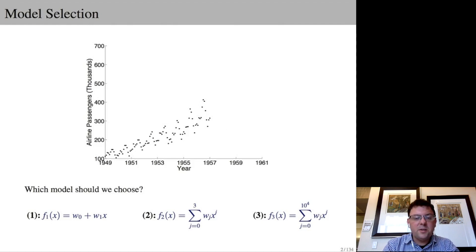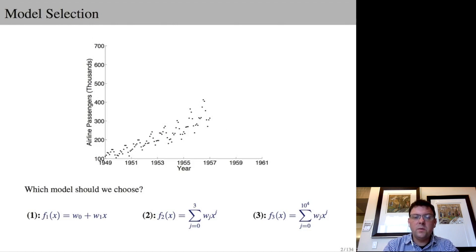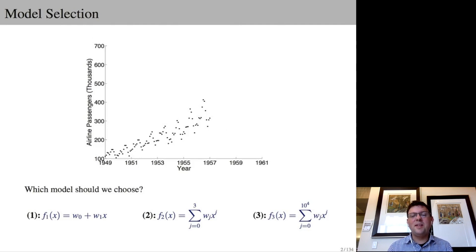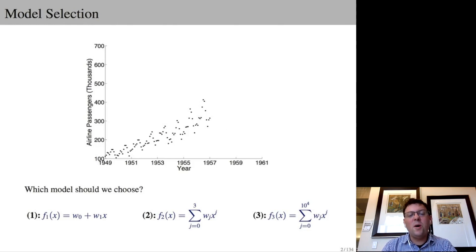We'll start with a pattern recognition problem where we have airline passenger numbers indexed by time. We'll consider three different modeling choices: choice one, a linear function; choice two, a cubic polynomial; and choice three, a 10,000th order polynomial. Most people go with choices one or two. In this tutorial, we'll argue for choice three, because the real world is a complicated place, and there'll be some setting of the coefficients — the WJs — which provide a better description of reality than choices one or two, which are just special cases of choice three.